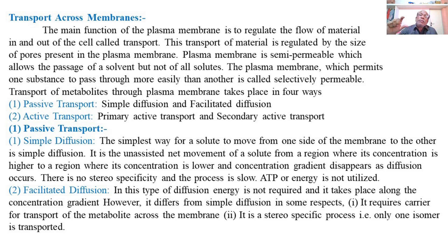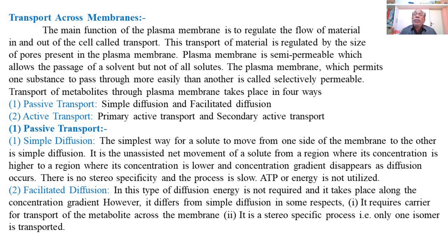Diffusion is a process of passage or transport of substances from a region of higher concentration to lower concentration, and this does not require any energy — ATP is not required. So passive transport includes two types: simple diffusion and facilitated diffusion, both occurring without spending energy.